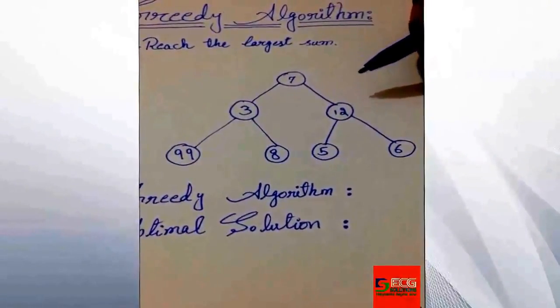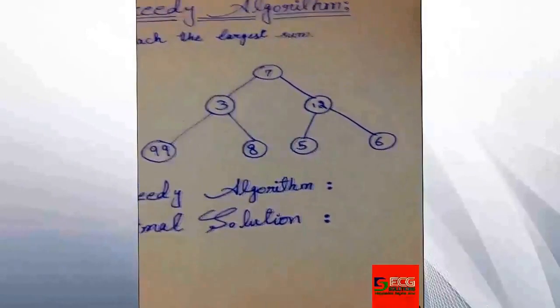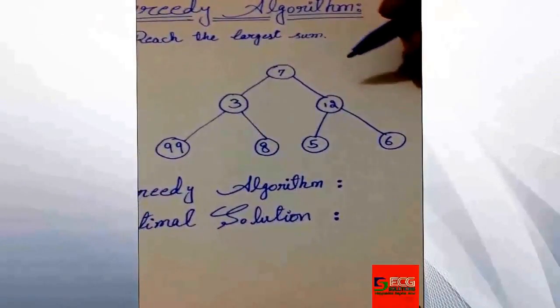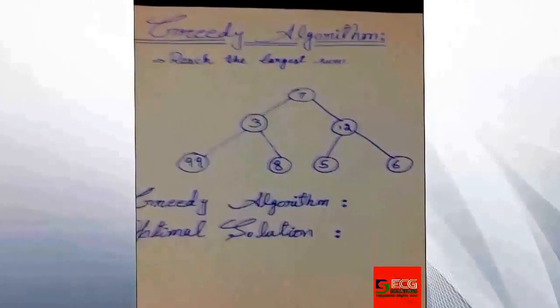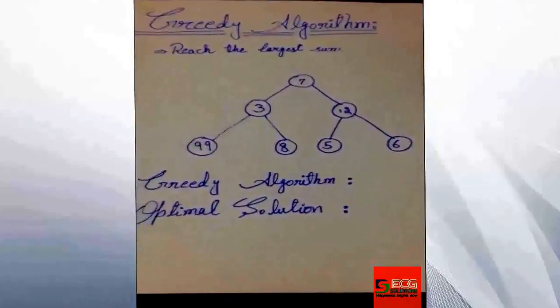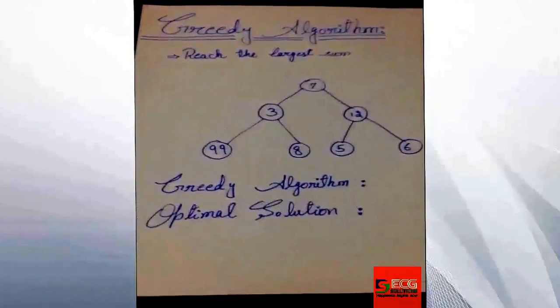Now let's move towards the functionality of greedy search algorithm and how it works. Let's suppose we have this tree and we need to find the largest sum in the tree. We take the root node, which is 7.